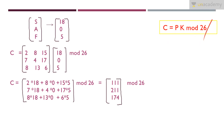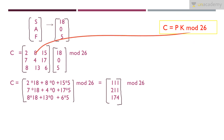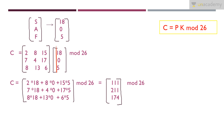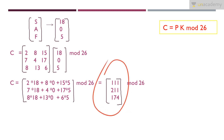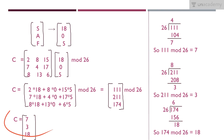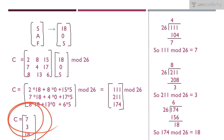Applying the formula C = K × P mod 26, we multiply the key matrix by the column vector [18, 0, 5]. Computing row by row: first row gives 2×18 + 8×0 + 15×5 = 111, second row gives 7×18 + 4×0 + 17×5 = 211, third row gives 8×18 + 13×0 + 6×5 = 174. Then we apply mod 26 to each result.